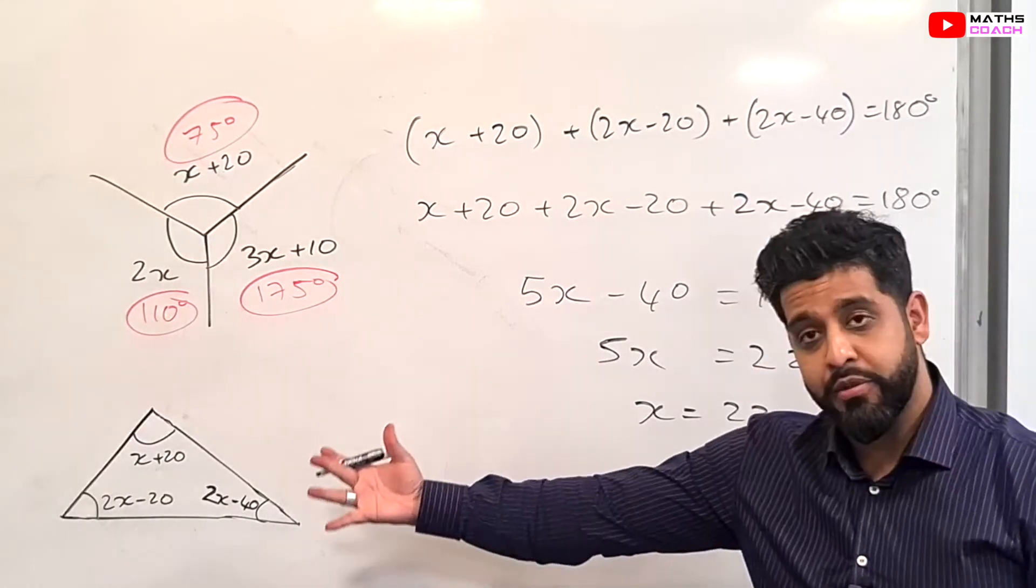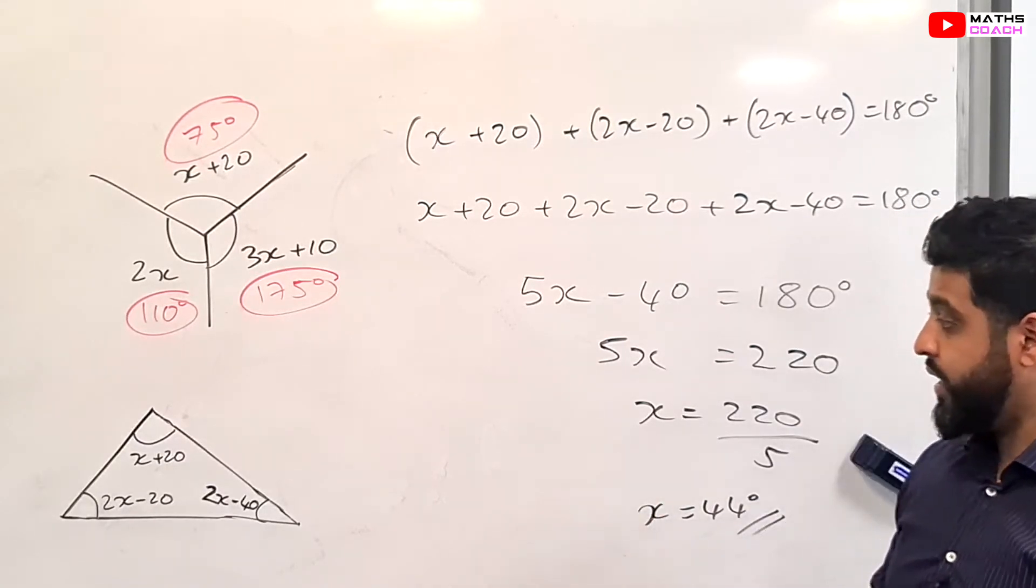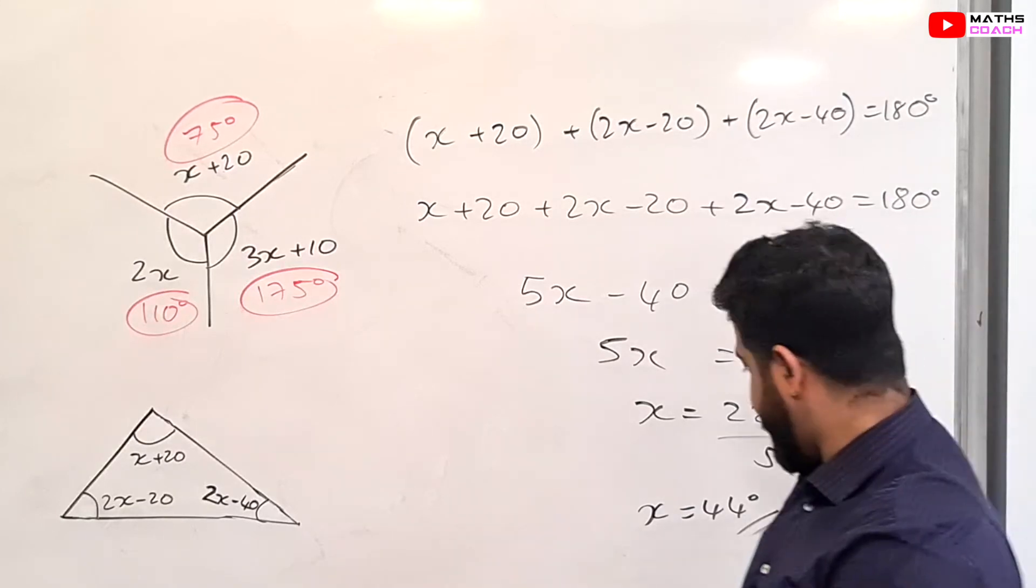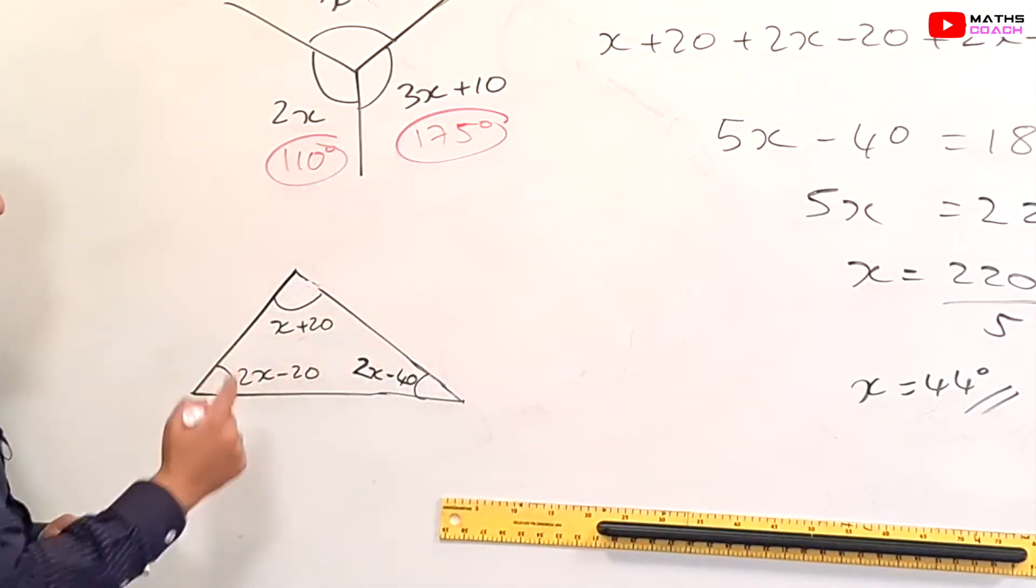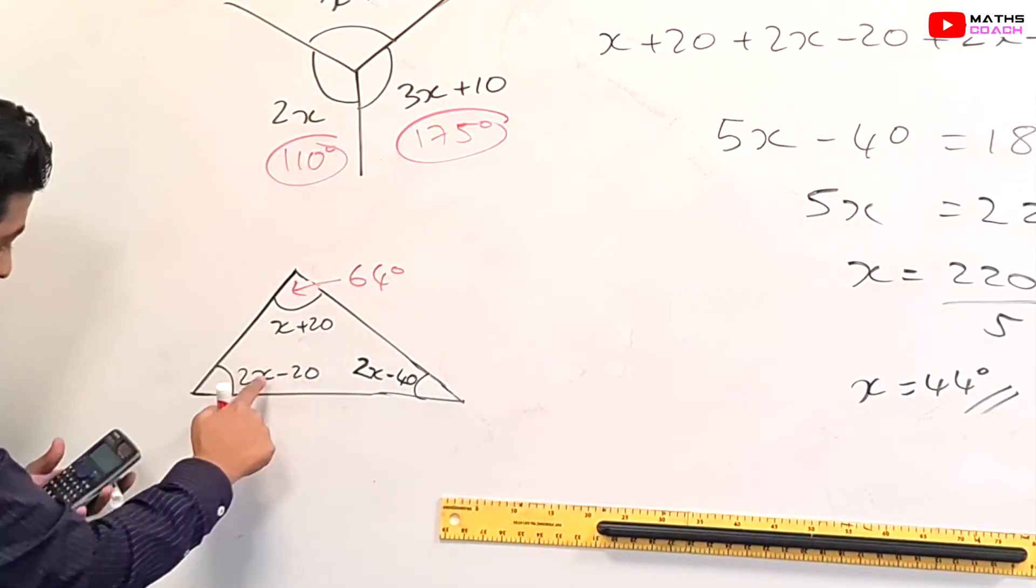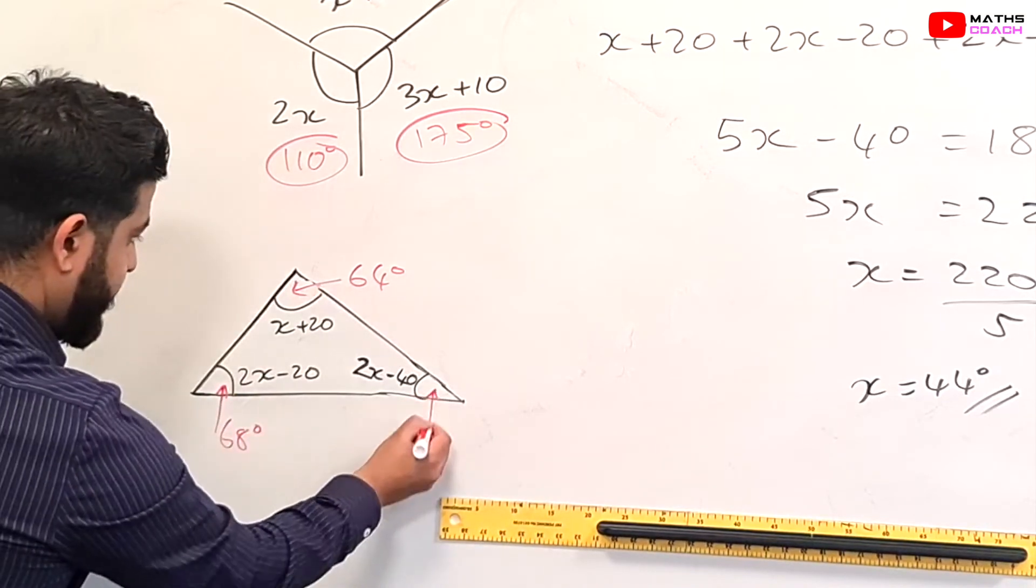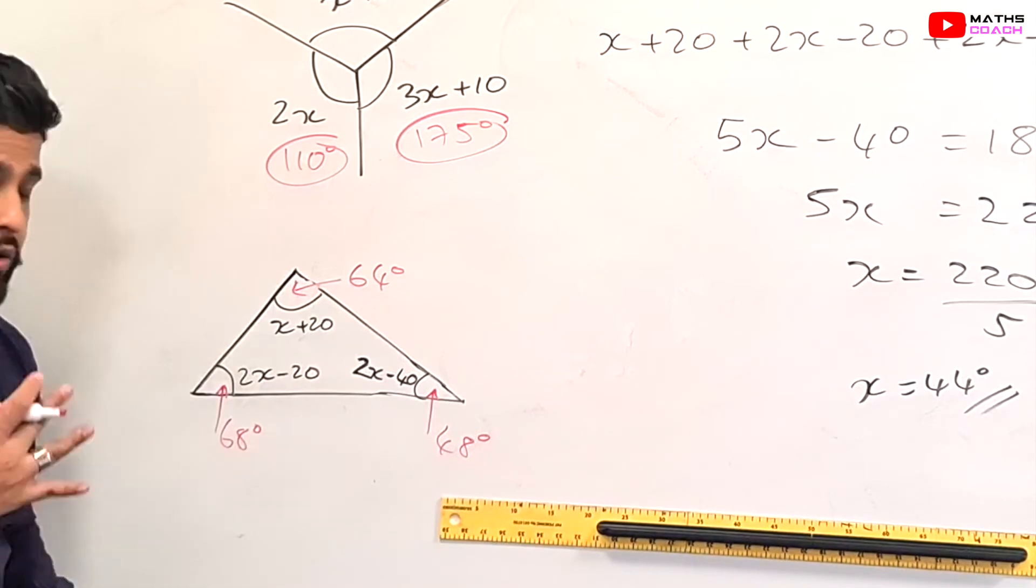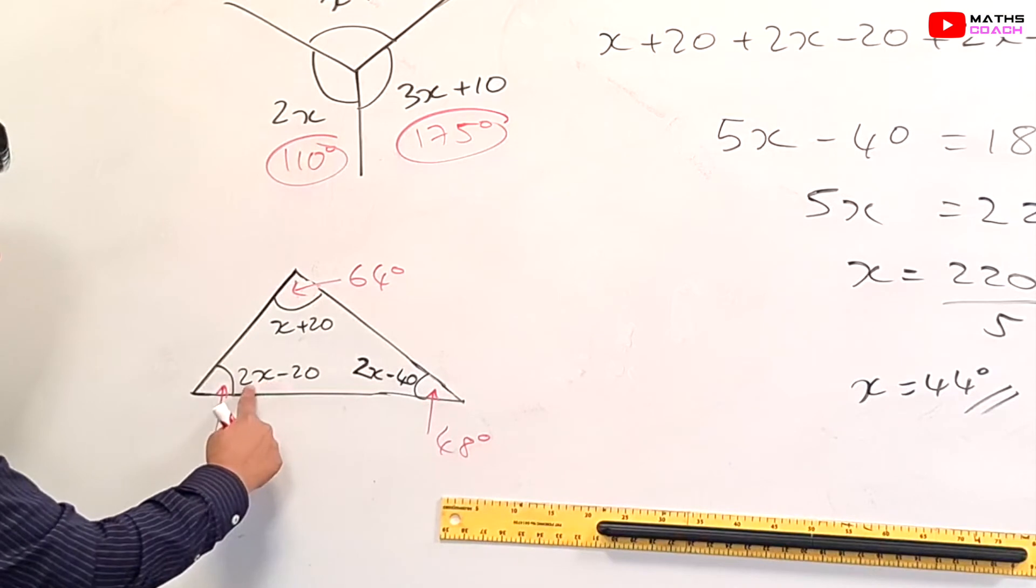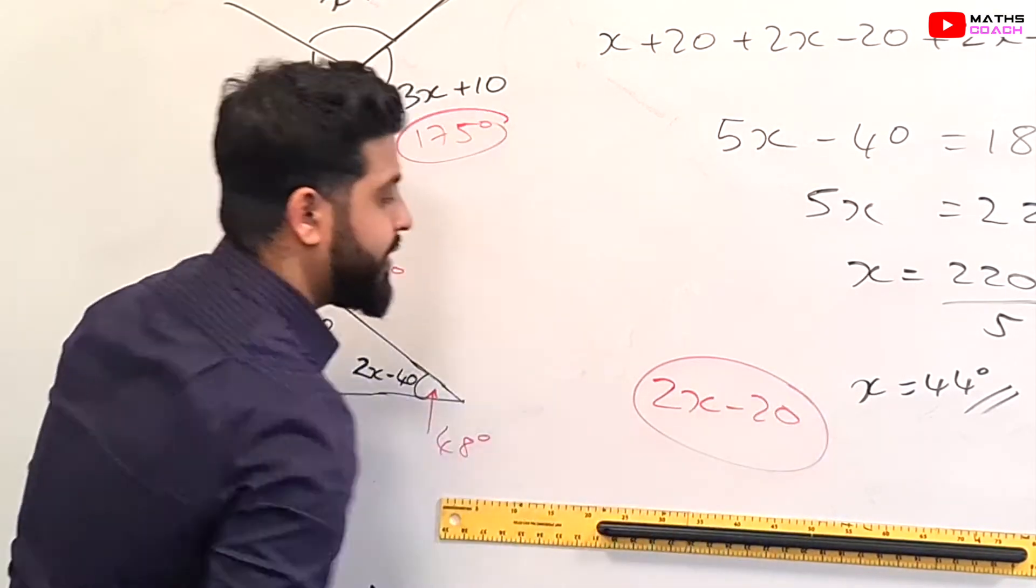Now of course you're expected to substitute all the values in because the question might ask for the largest or smallest angle. So let's sub those values back in. When we substitute X equals 44 back into our diagram, we get 64 here, 44 plus 20. For this one we get 68. So the largest angle is this one here, 2X minus 20.